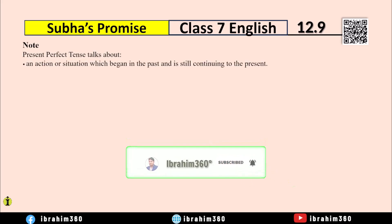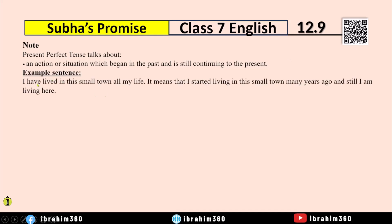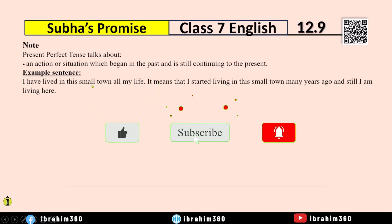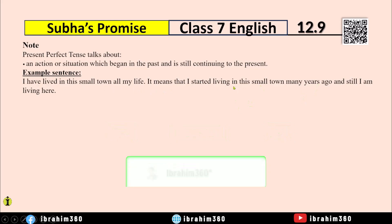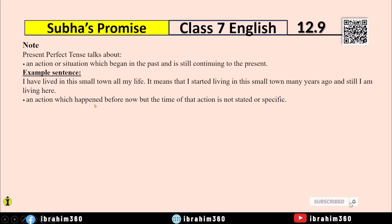Present Perfect Tense is the action or situation which begins in the past and still continues to the present. For example: 'I have lived in the small town all my life.' It means that I started living in the small town many years ago and still I am living here. This is the Present Perfect Tense — 'I have lived in small town all my life.' But the time of that action is not stated or specific.